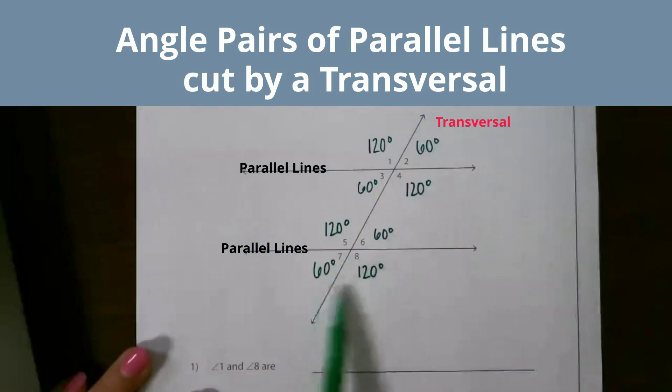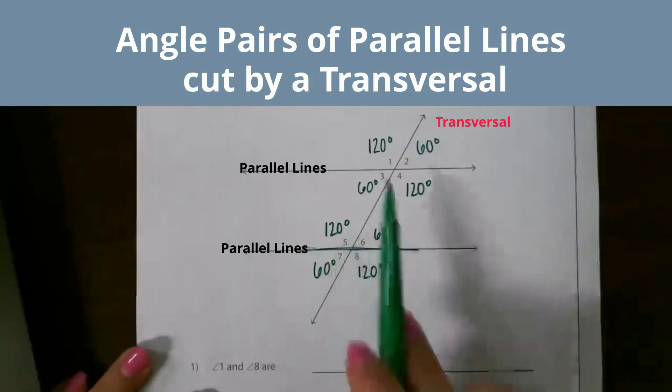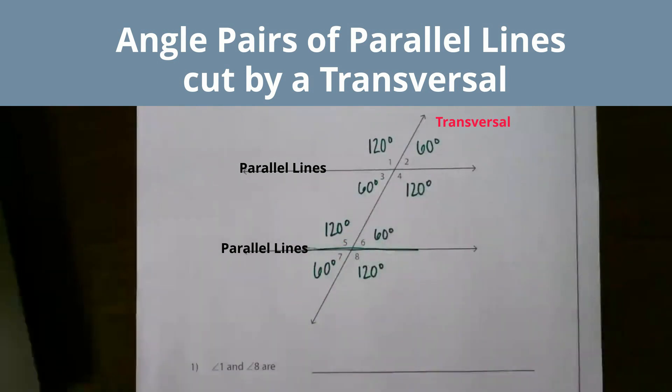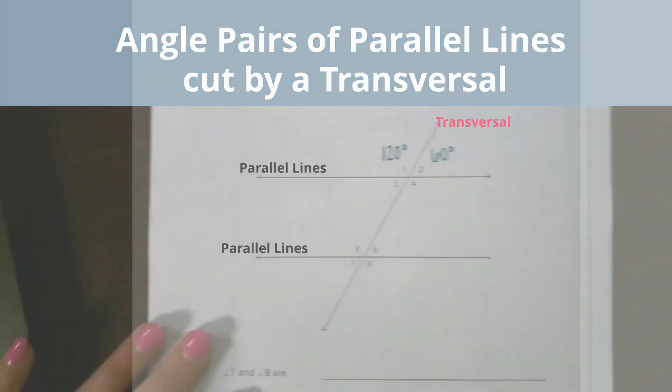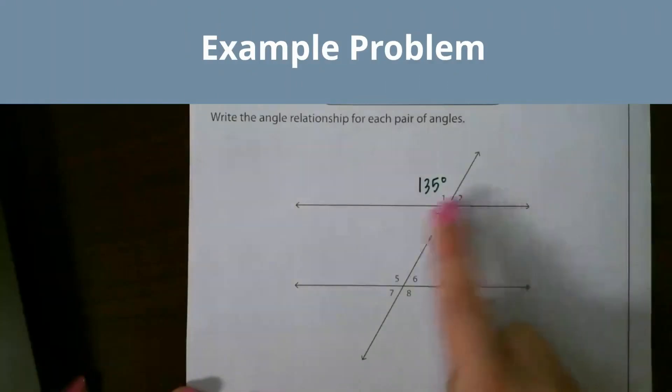So each time we have a straight line, those should add up to 180 for each of those. Now see if you can figure out the missing angles on these parallel lines based on what we know.